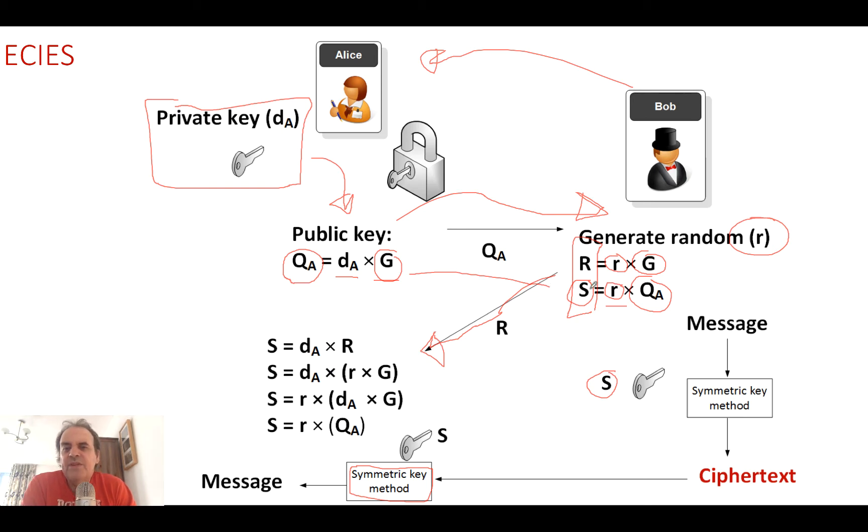He takes the message and encrypts it with a symmetric key algorithm such as AES to get the ciphertext. He passes the ciphertext along to Alice and passes along the R value. Bob doesn't send the S value, he sends the R value with the ciphertext.